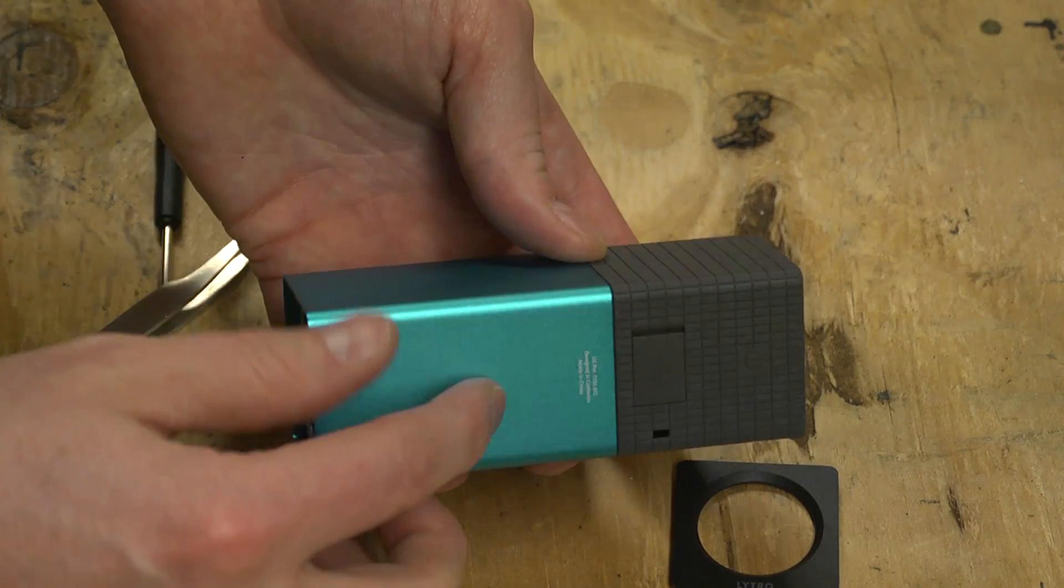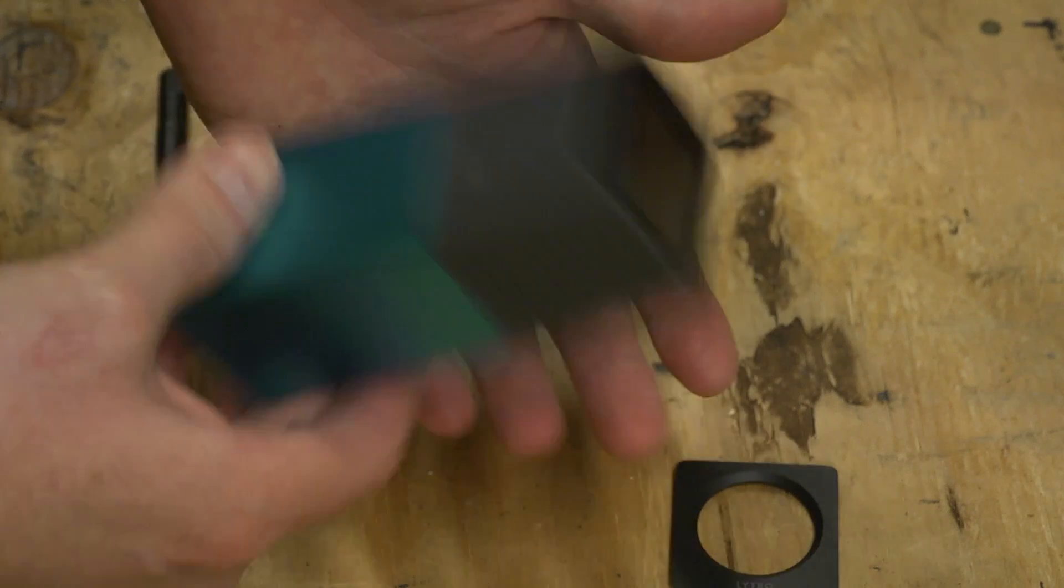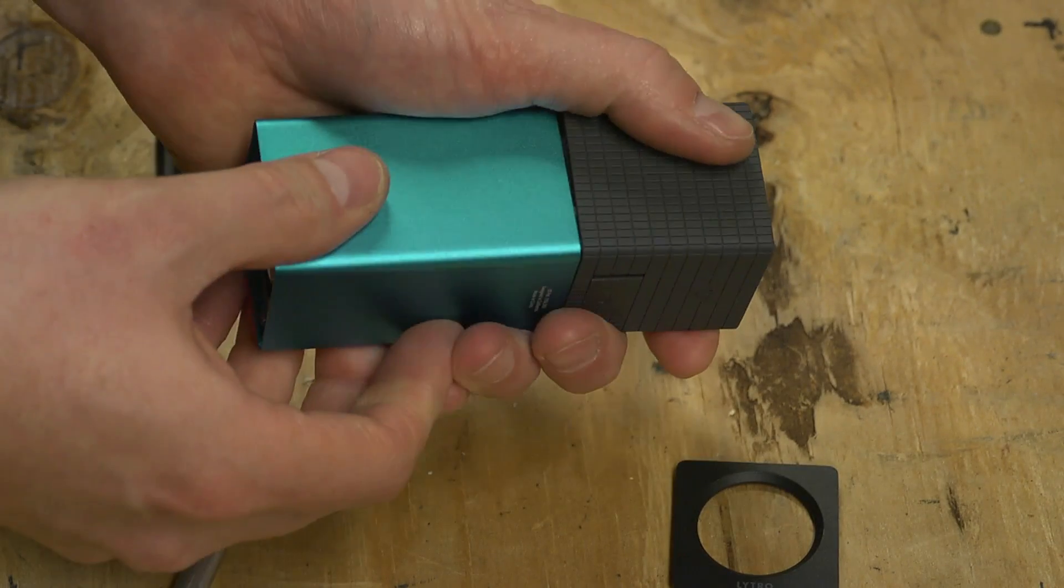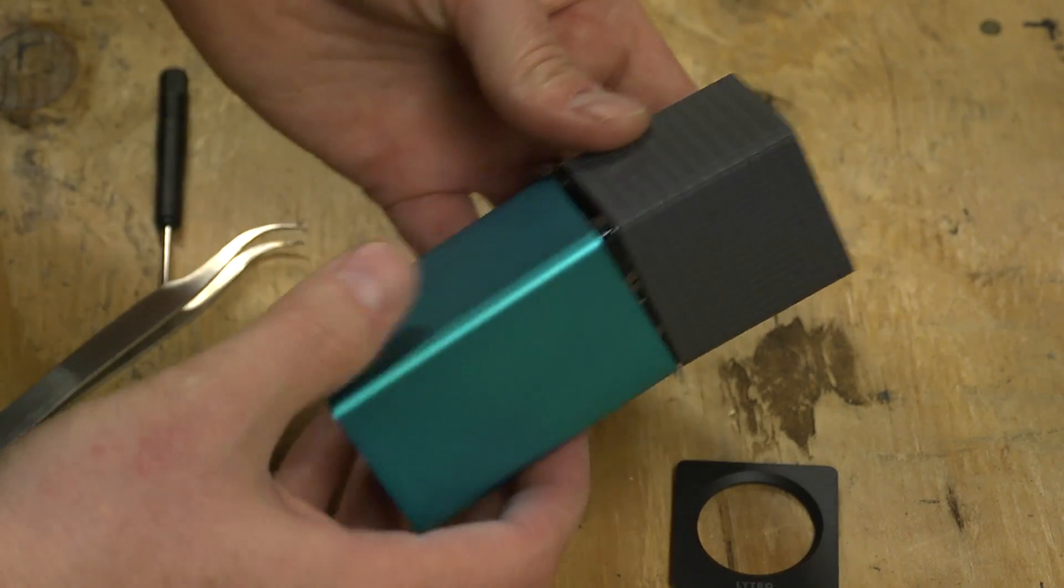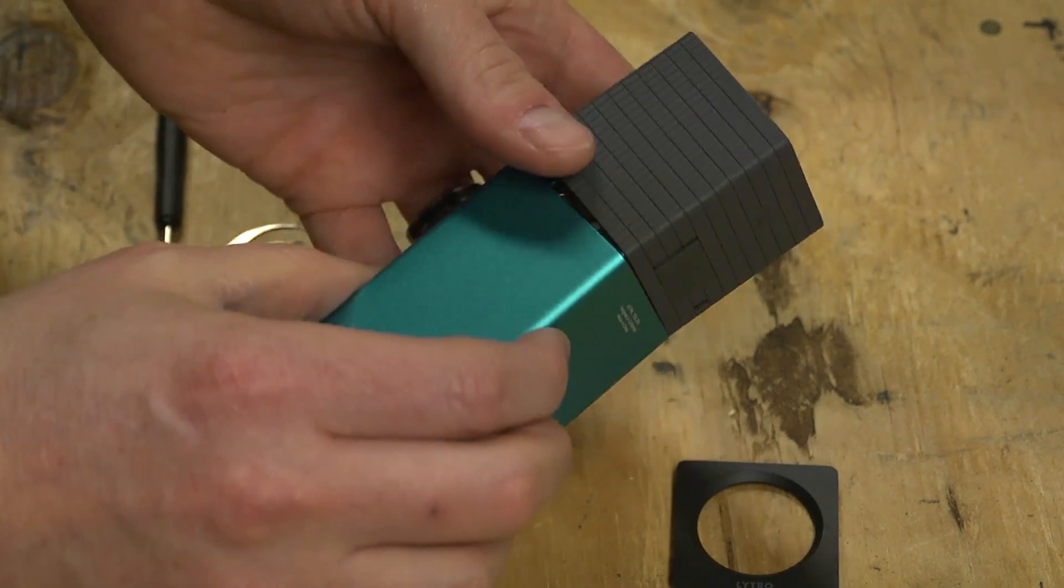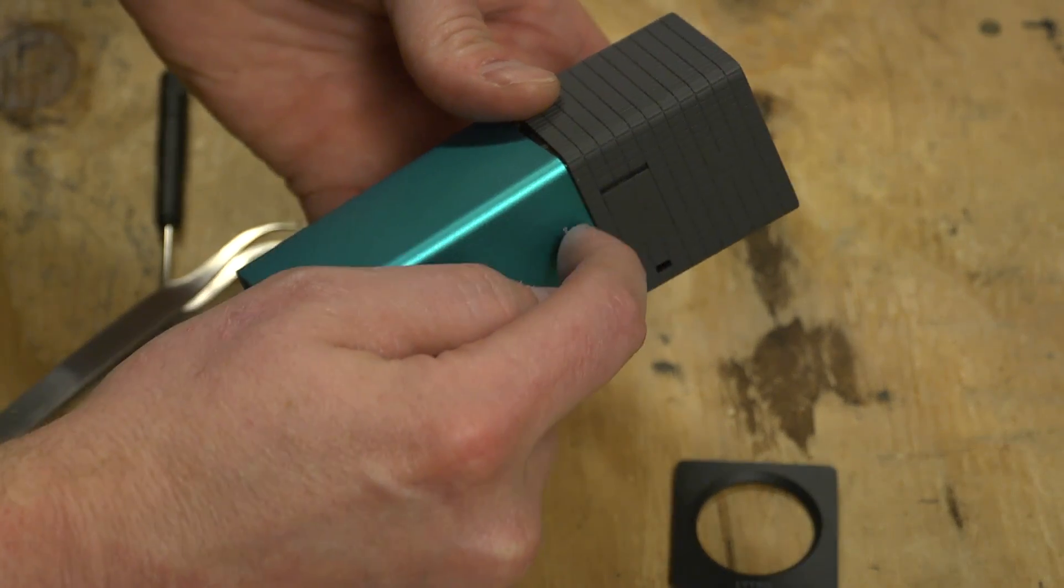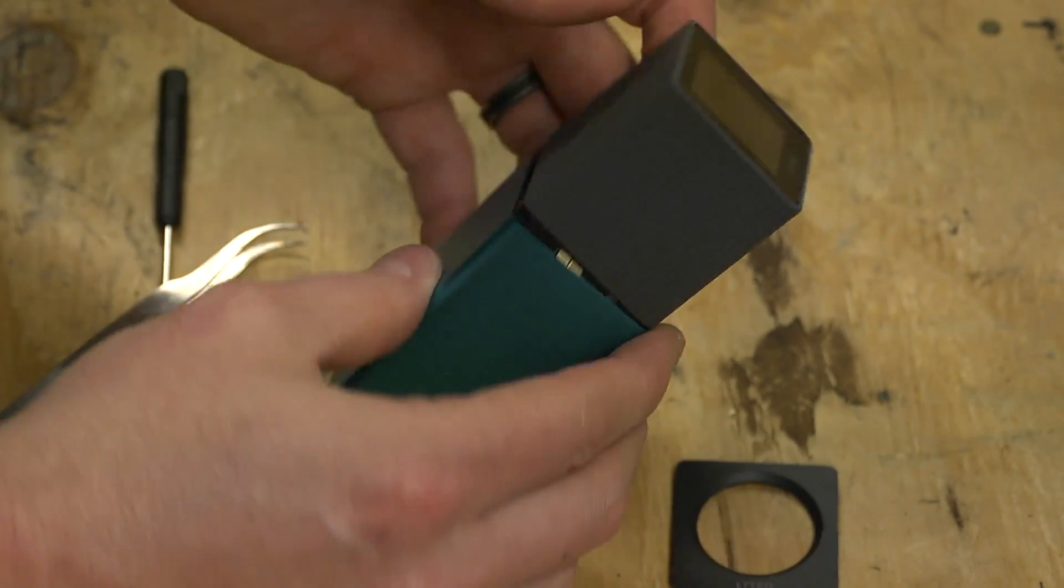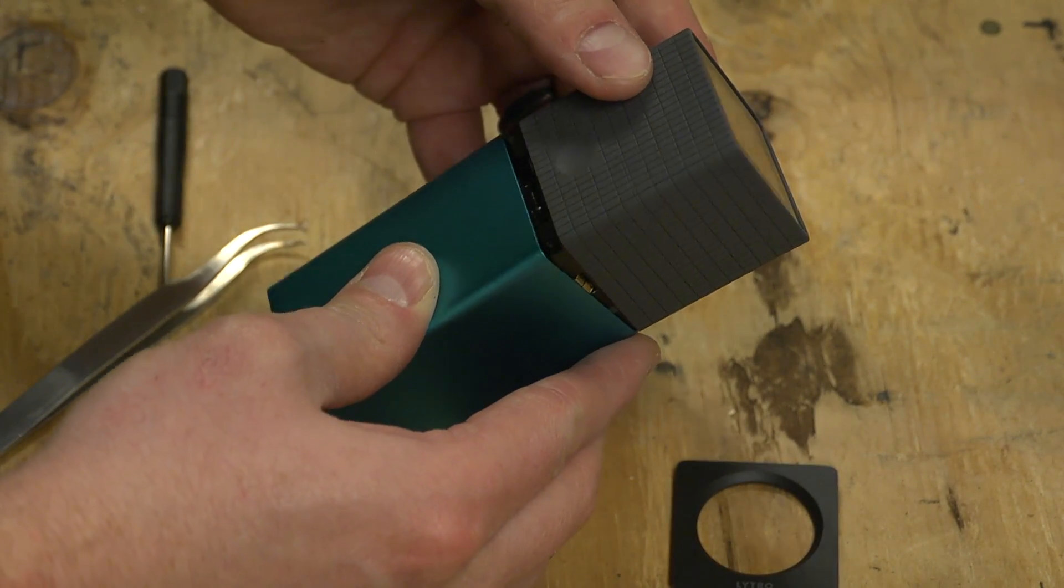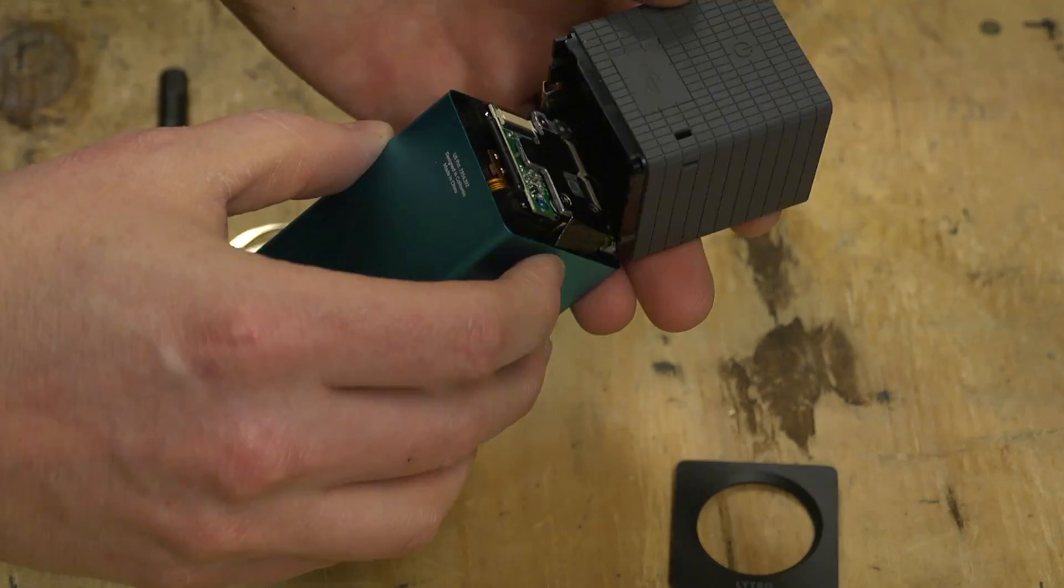Taking the two halves apart is a snap. It just comes apart. The trick is they're connected with some ribbon cables right here. You can see it kind of clamshells open, just like that.